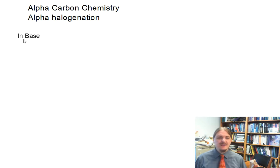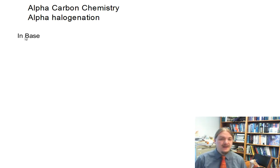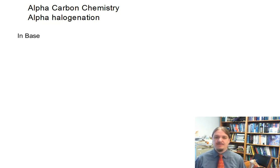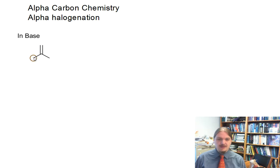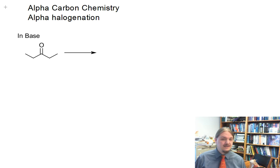In this video, I'm going to talk about alpha halogenation of carbonyl compounds, and we're going to focus on this reaction in base. In the previous video, I shared that aldehydes and ketones can undergo alpha halogenation in acids, so this time we're going to talk about the base version.